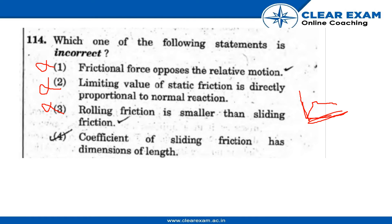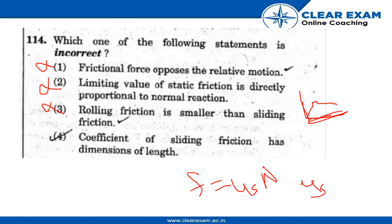The fourth option states that the coefficient of sliding friction has dimensions of length. We know that the coefficient of sliding friction is dimensionless — it has no dimensions. Using the formula f = μₛN, we get μₛ = f / N, which is dimensionless.